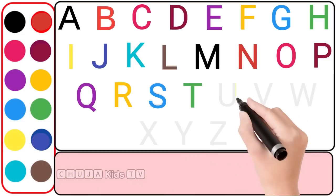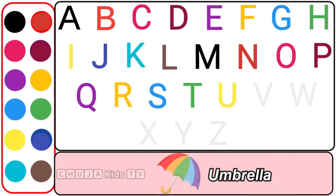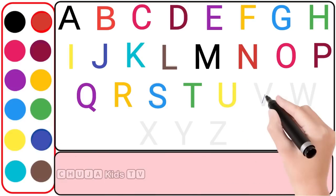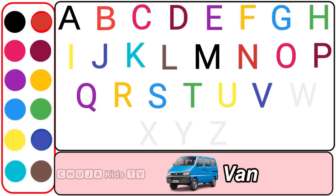Yellow color, U. U for umbrella. Navy blue color, V. V for wand.